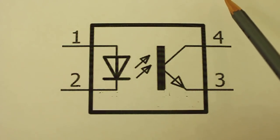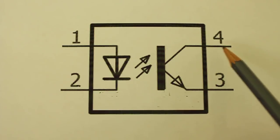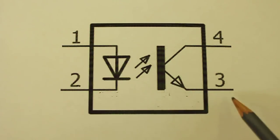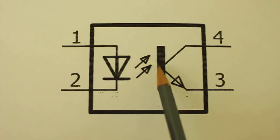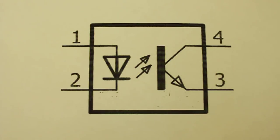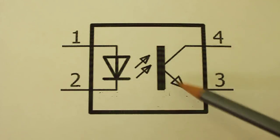An NPN transistor acts like a normally open switch. That is, current cannot flow through collector and emitter. But when we apply a current to the base, then the switch closes and the current now can flow from collector to emitter.